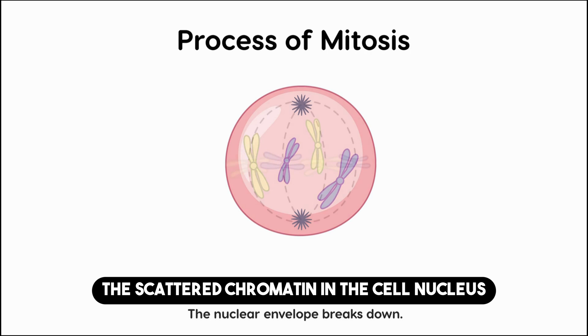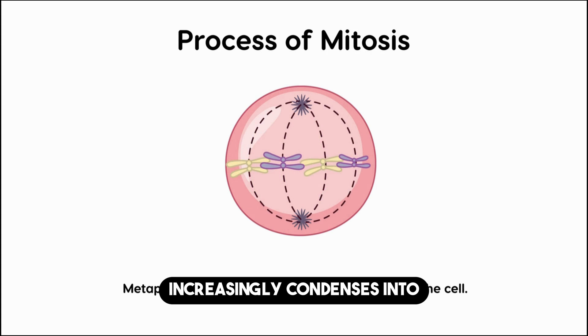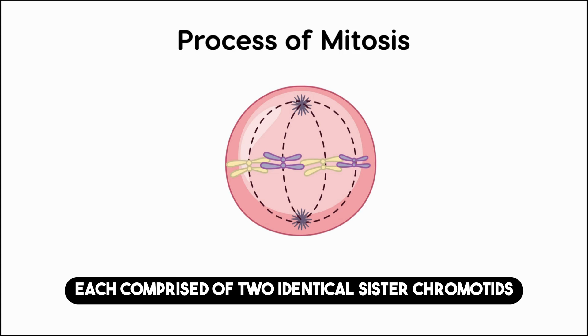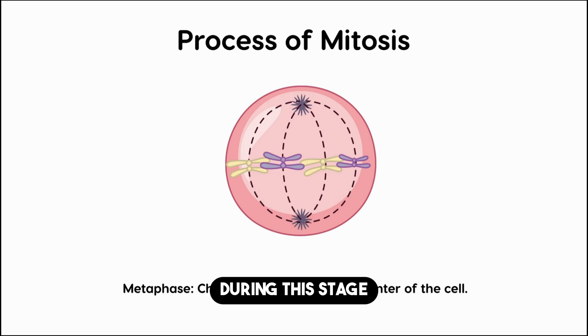The scattered chromatin in the cell nucleus increasingly condenses into well-defined chromosomes, each comprised of two identical sister chromatids, during this stage.